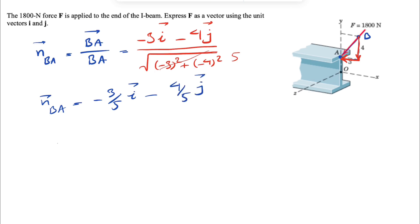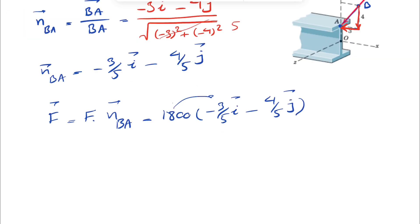All we need to do in here is just to find X and Y component based on this unit vector. So our F in vector form would be the magnitude times the n_BA or our unit vector. We know the magnitude of the force is 1800, so 1800 times minus 3 over 5i, minus 4 over 5j.